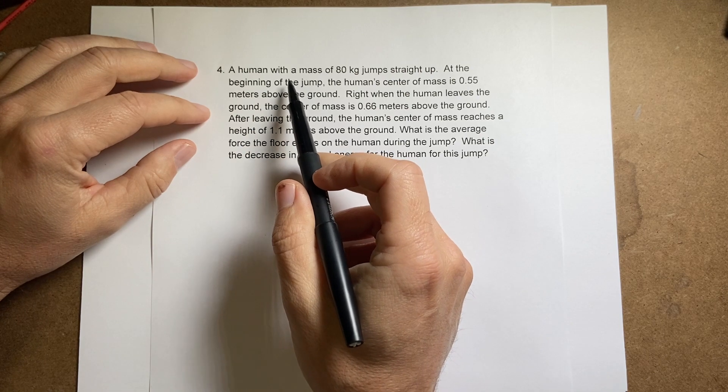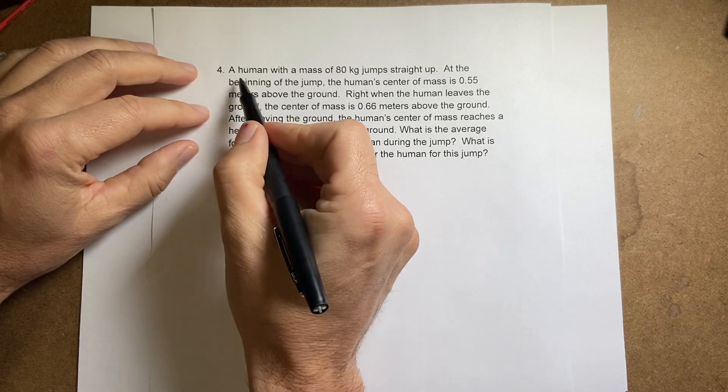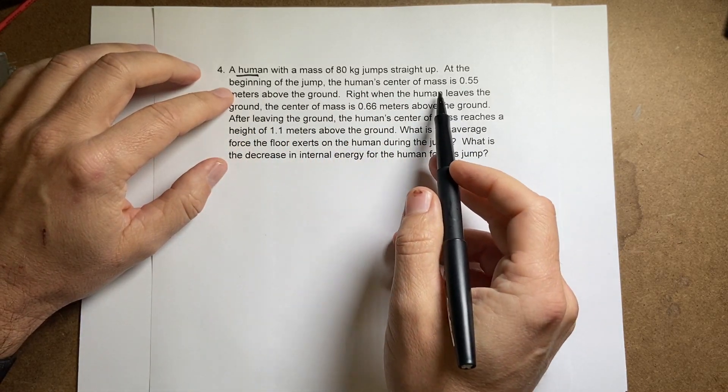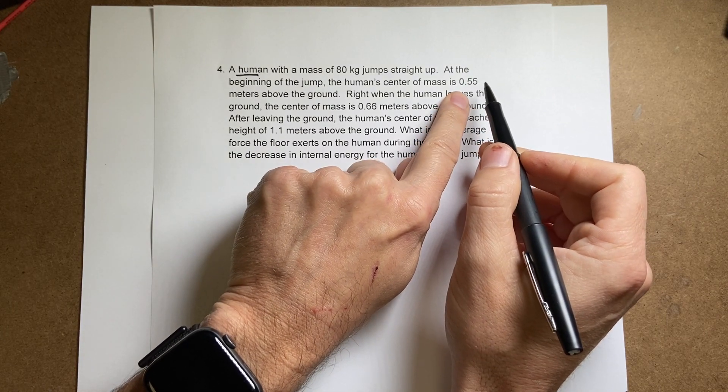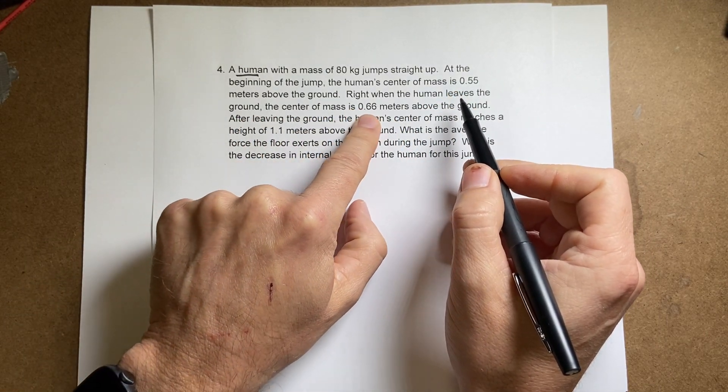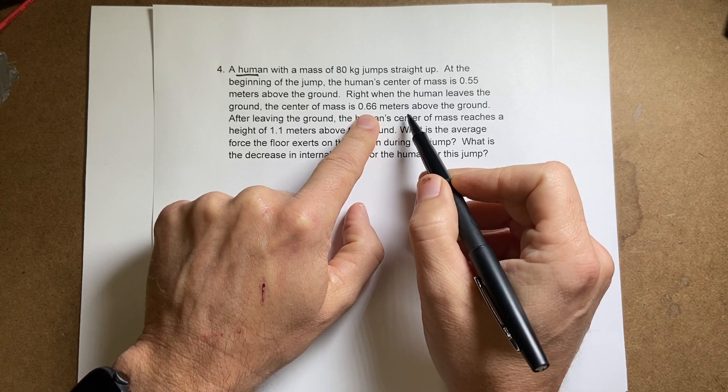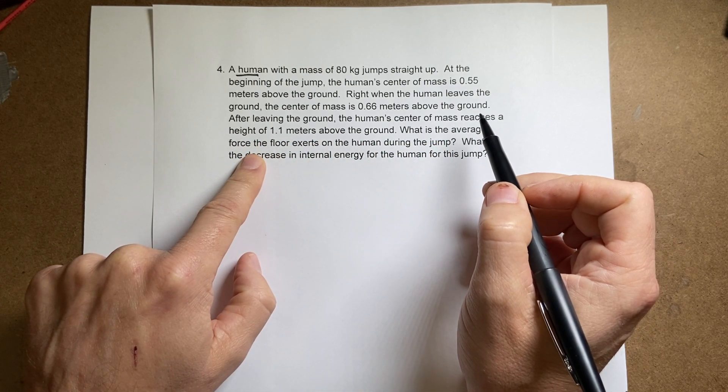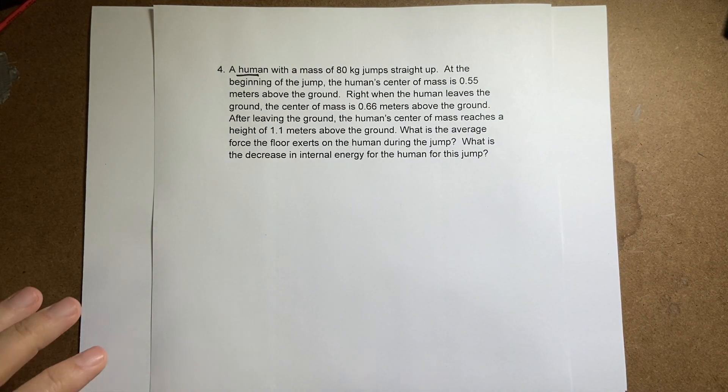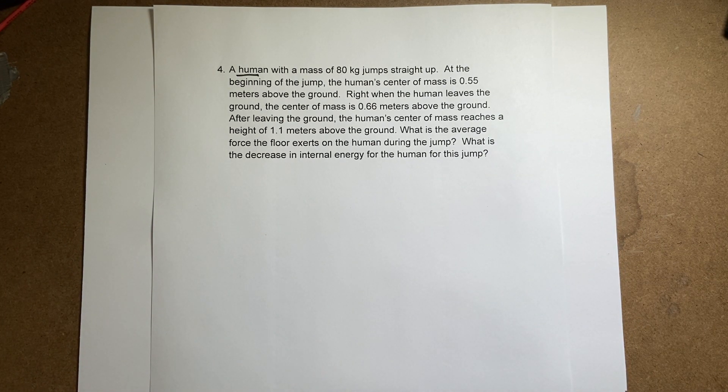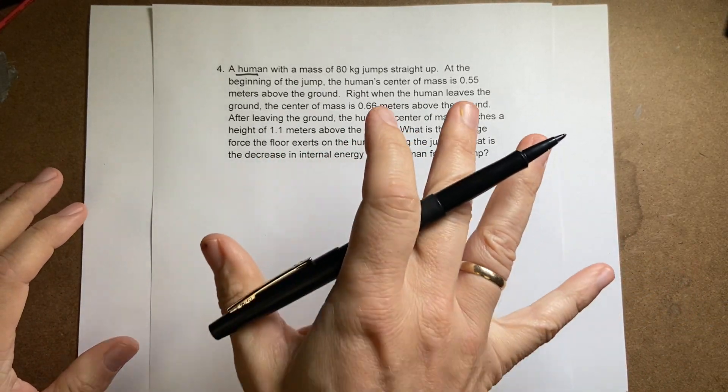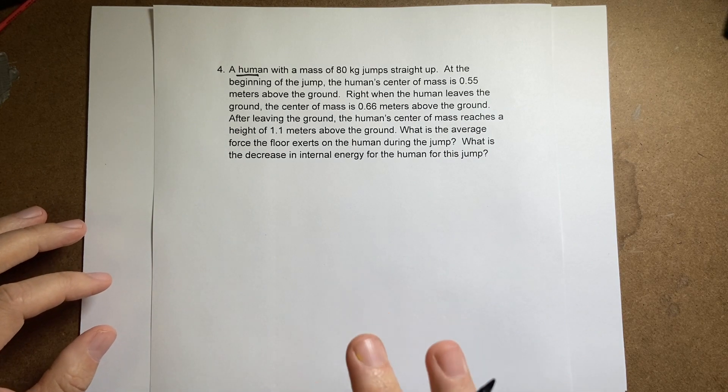So here we have a human, it's not an alien, it's a human. With a mass of 80 kilograms jumping straight up. At the beginning of the jump, the center of mass is 55 centimeters above the ground. Right when the human leaves the ground, it's 66 centimeters above the ground. After jumping, the highest point is 1.1 meters above the ground. What's the average force the floor exerts on the human during this jump? And what's the decrease in internal energy for this jump? I really like this problem. I've actually done a problem like this in class before. So I didn't want to draw a picture, and I'll draw the picture for you now.